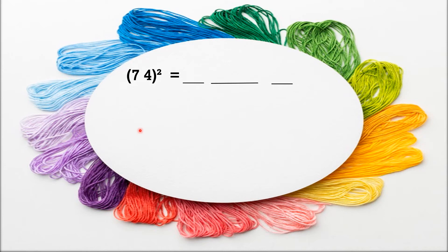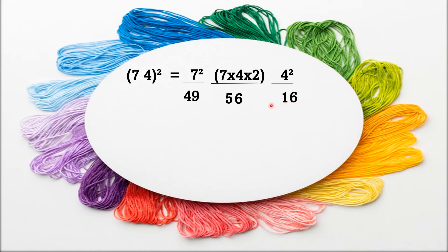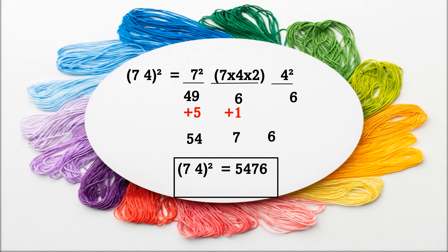This is with 2 carryovers. For 74 squared: the first number is 7 squared, the last number is 4 squared, and the middle number is 7 into 4 into 2. So 7 squared is 49, 7 into 4 into 2 is 56, and 4 squared is 16. Here we have 2-digit numbers in both the middle and last positions. The unit place of 16 remains, and the 1 is added to 56, giving 57. Then the 5 is added to 49, giving 54. So the final answer from right to left is 6, 7, 54 — meaning 74 squared equals 5476.